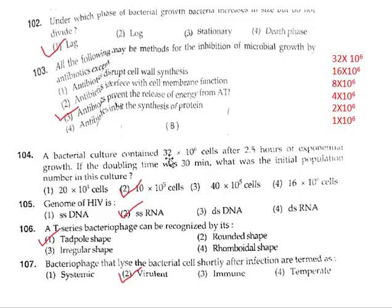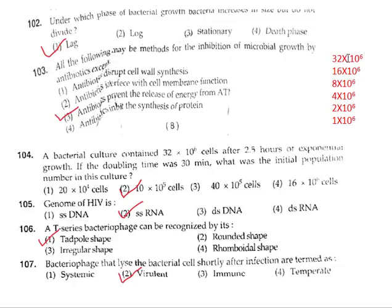Question 104: A bacterial culture contains 32 × 10⁶ cells after 2.5 hours of exponential growth. If the doubling time was 30 minutes, what was the initial population? With 30-minute doubling time over 2.5 hours, there are 5 generations. Working backwards: 32 → 16 → 8 → 4 → 2 → 1, so the initial population was 1 × 10⁶, which equals 10 × 10⁵. The correct answer is option 2.